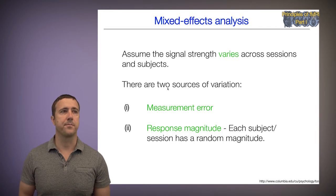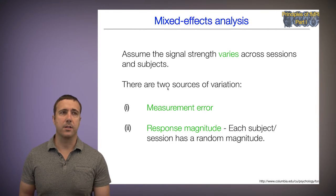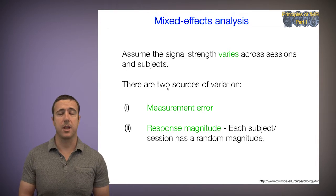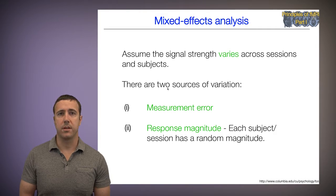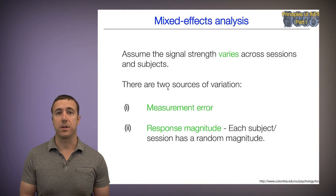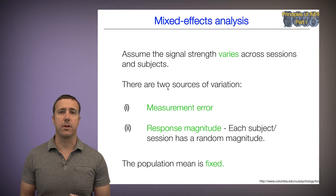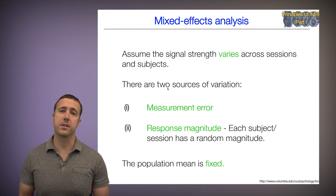The second is random response magnitude. So every subject or every subject in every session has a random magnitude for their true response. All we're saying here is that all the subjects are different from one another. So those are two basic sources of variation or two basic variance components.